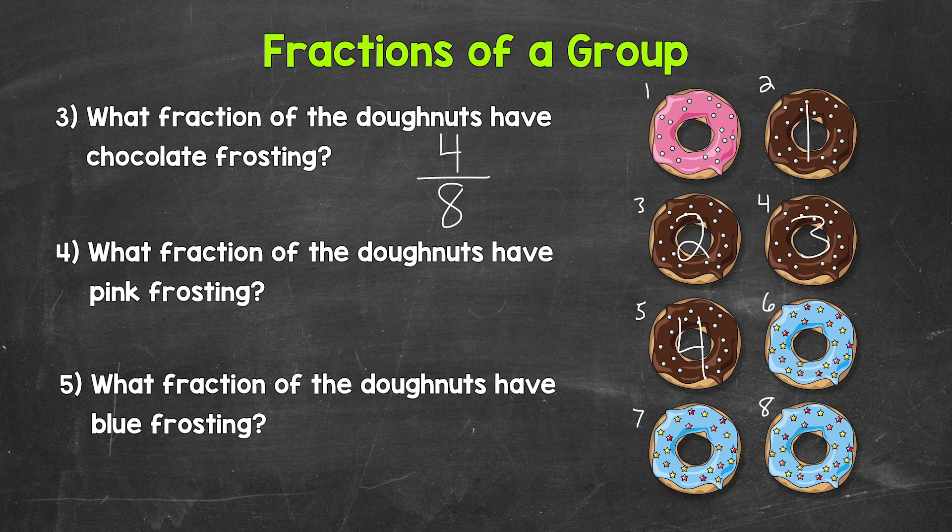Let's move on to number 4 where we have what fraction of the donuts have pink frosting. We know that we have 8 total donuts. So that's going to be our denominator. And now for the numerator. So how many of the 8 donuts have pink frosting? 1. So 1 is our numerator. 1 out of 8 donuts has pink frosting. So our fraction is 1 eighths.